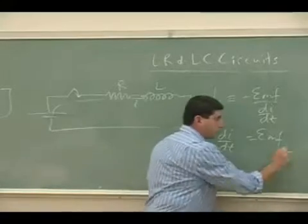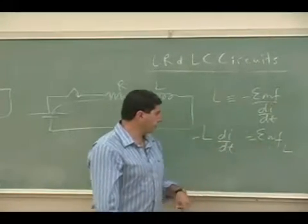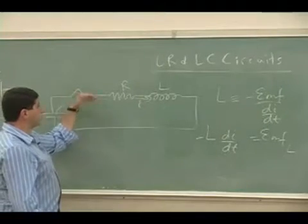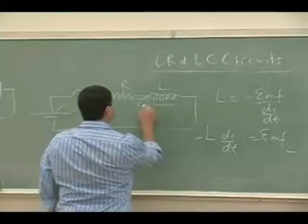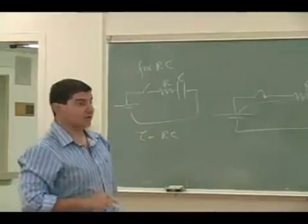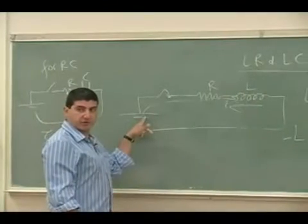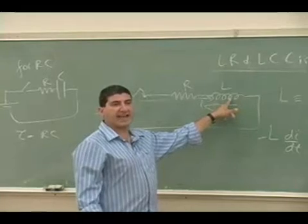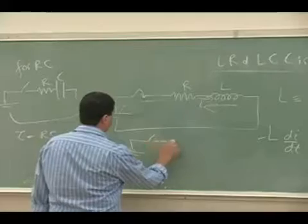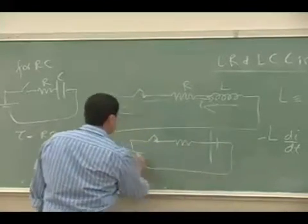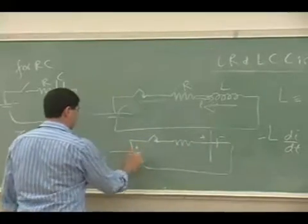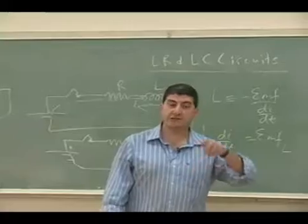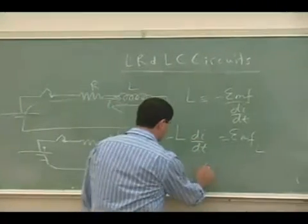The EMF that the inductor produces depends on its inductance times the rate of change of current. When you initially introduce the current, the rate of change of current is high, so the EMF it produces is very high — actually equal to the EMF of the battery. That means the initial current is going to be very low. The inductor almost acts like a battery pointing the other way, fighting against the original battery.